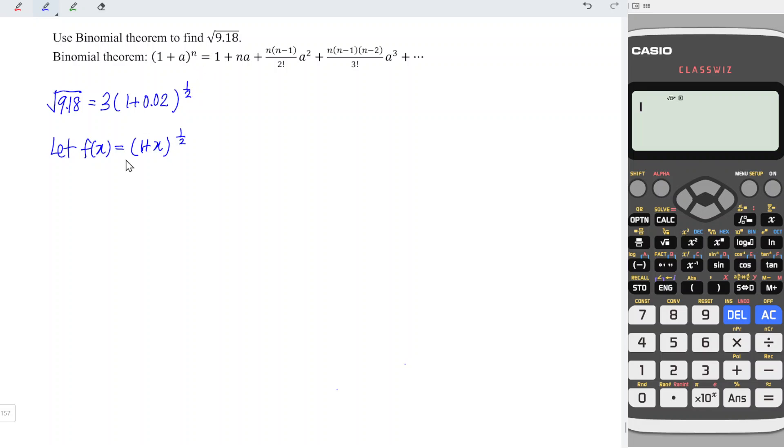By using the binomial theorem, f(x) is equal to 1 plus n is the power 1 over 2, a is x for this case, and we plus 1/2 times (1/2 minus 1) divided by 2 factorial x to the power of 2 plus 1/2 times (1/2 minus 1) times (1/2 minus 2) divided by 3 factorial x³ plus 1/2 times (1/2 minus 1) times (1/2 minus 2) times (1/2 minus 3) divided by 4 factorial x⁴ and so on.